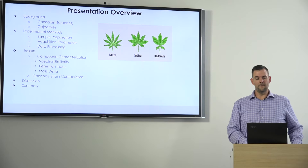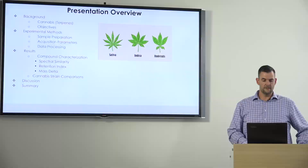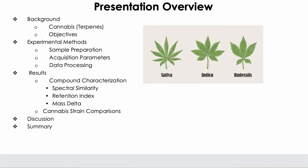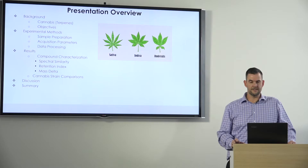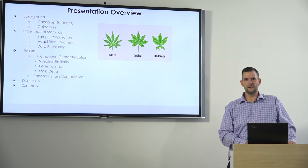A little bit of background for the presentation. We're going to take a look at which cannabis terpene types we're looking at, look at the objectives, look at some of the experimental methods such as the sample prep, the data acquisition, and the data processing strategies. Then we'll dig into some of the results, such as the compound characterization based on spectral similarities, retention index matches, and mass delta differentiation. Then we'll try to incorporate some of these strategies to differentiate the different cannabis strains, followed by a brief discussion and summary.